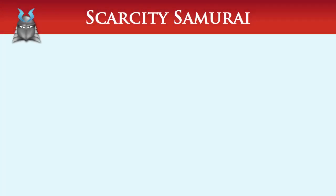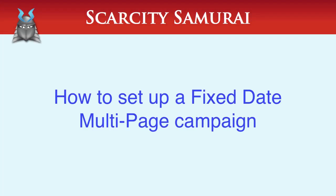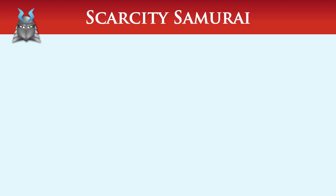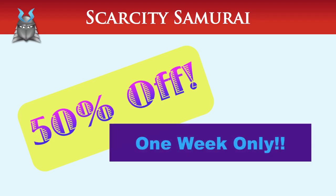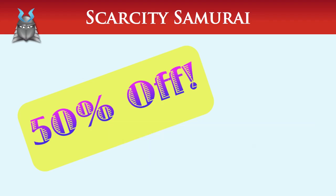In this video, I'll show you how to use Scarcity Samurai's fixed-to-date multi-page wizard to set up a campaign designed around a specific end date. For instance, you may wish to have a special deal on your product, in which you offer the product for a 50% discount for one week, after which the special deal is no longer available.